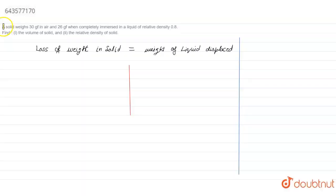The question states that a solid weighs 30 gF in air and 26 gF when it is completely immersed in a liquid of relative density 0.8. We have to find the volume of solid and the relative density of the solid.